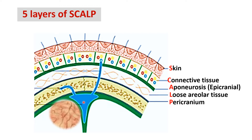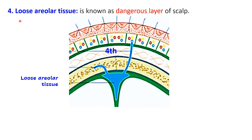Keeping this in view, let us see which layer is known as the dangerous layer of scalp. It is the fourth layer — the loose areolar tissue — that is known as the dangerous layer of the scalp. As the name suggests, it is a loosely arranged form of connective tissue that acts as a potential space. If there is any infection, pus can get collected here; if there is injury or cut blood vessels, blood can also accumulate here.